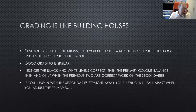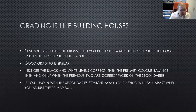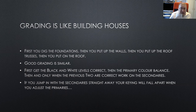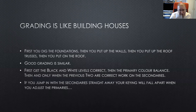Grading is like building houses. First you dig the foundations, then you put up the walls, then the roof trusses, then the roof. Good grading is similar: first get the black and white levels correct, then adjust the primary color balance, and only when those two are correct, work on the secondaries. If you jump into the secondaries straight away, your keying will fall apart when you adjust the primaries. Just take it in order, one step at a time.